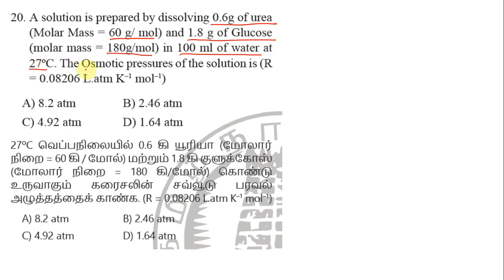In 100 ml of water at 27 degree Celsius. It says, the osmotic pressure of the solution is R-value, 4 options. In 27 degree Celsius, 0.6 gram urea, 1.8 gram glucose.